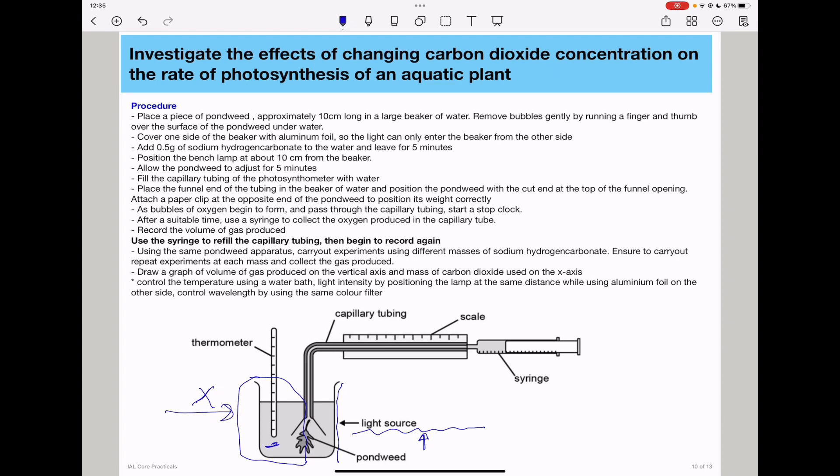The procedure is as follows: Place a piece of pondweed, approximately 10 centimeters long, in a large beaker of water. Remove bubbles gently by running a finger and thumb over the surface. Cover one side of the beaker with aluminum foil so light can only enter from the other side. Add 0.5 grams of sodium hydrogen carbonate to the water and leave for 5 minutes.